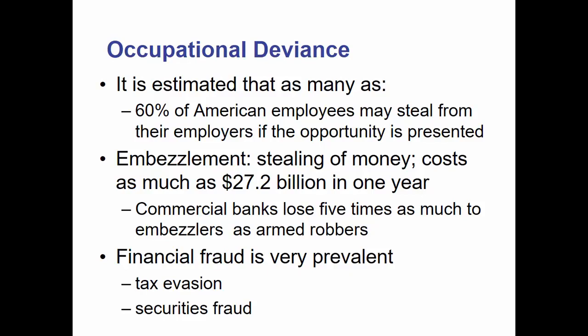This ranges from hypothetically stealing a stapler to taking money and embezzling, if the opportunity is present. Embezzling is the stealing of money, and it costs the economy as much as $27.2 billion per year. Commercial banks lose five times as much to embezzlers as they do to armed bank robbers. The average bank robber only gets away with about $5,000, while the average embezzler gets away with at least $100,000.